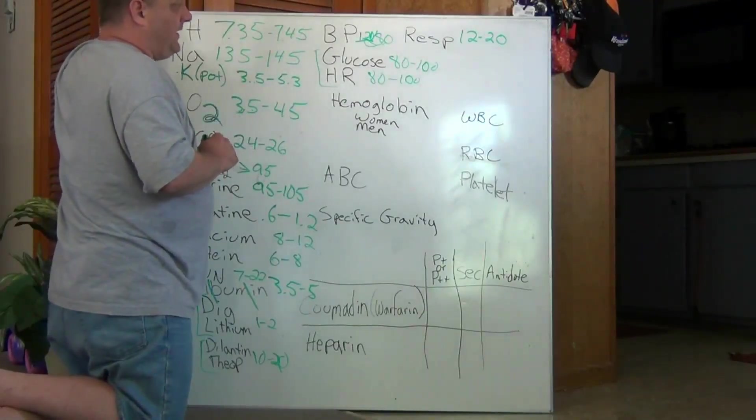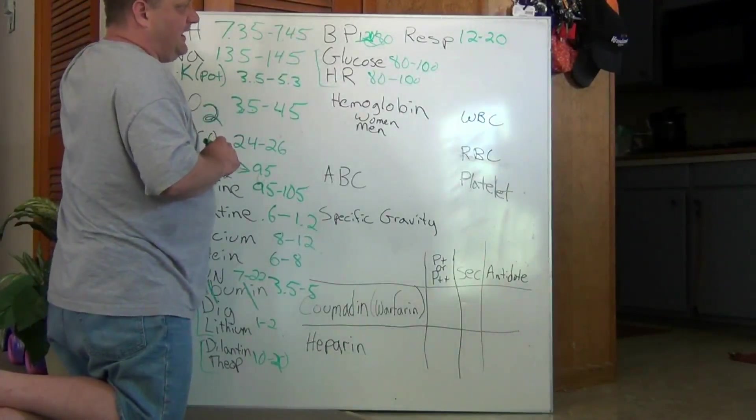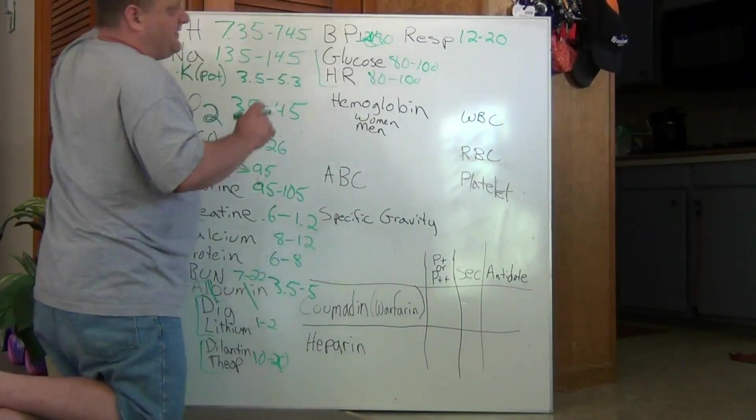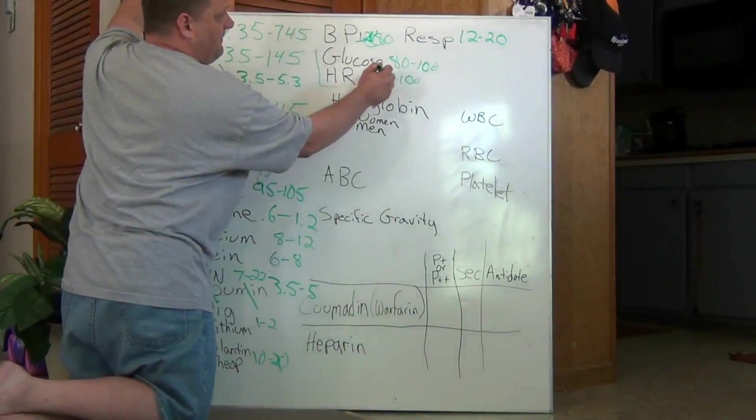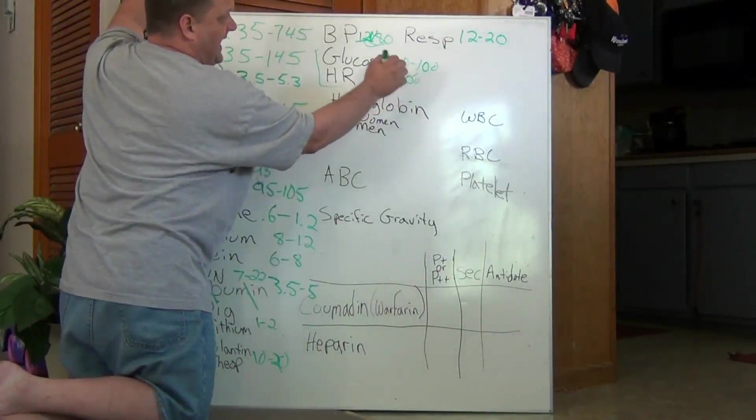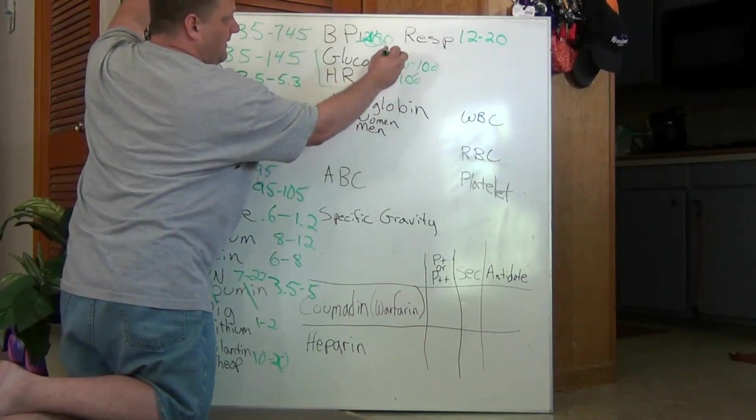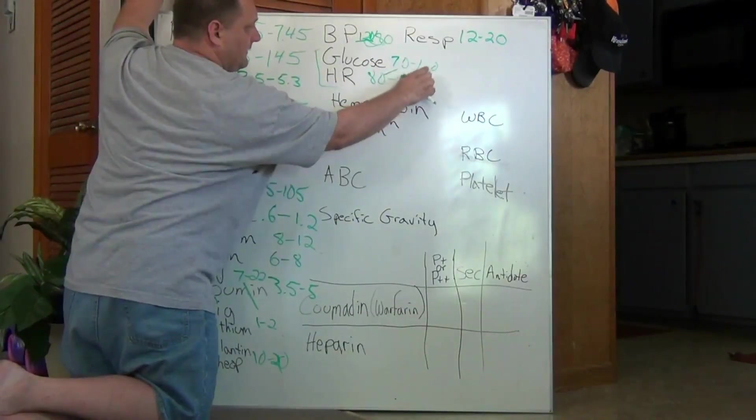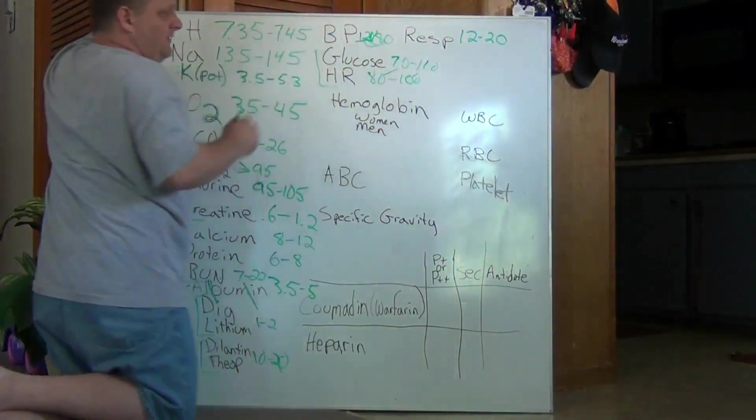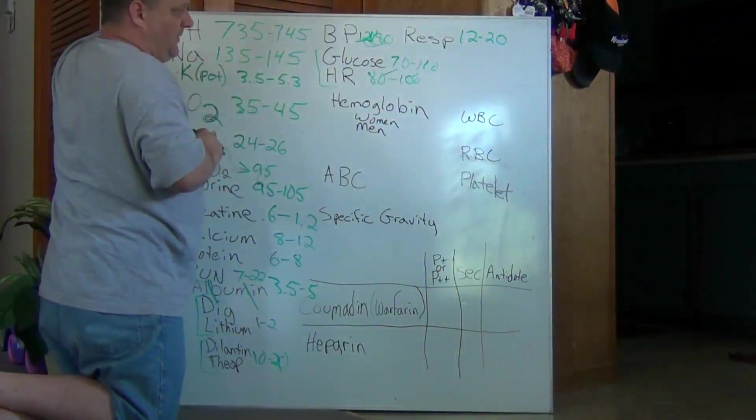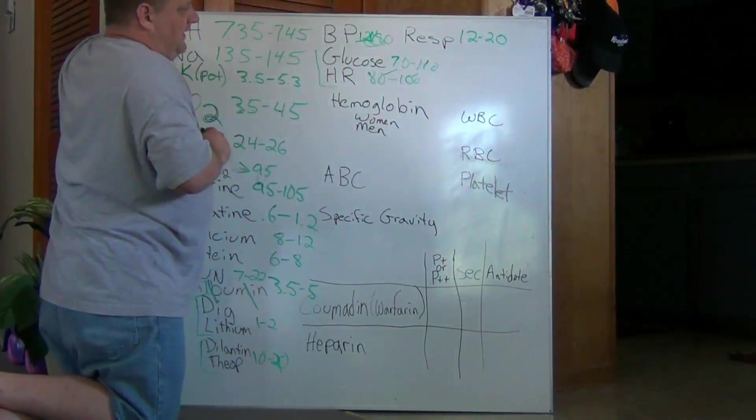Some books say glucose is 70 to 110. So if we subtract 10 from the heart rate and add 10, we would get 70 to 110 for glucose. That's a good ballpark.